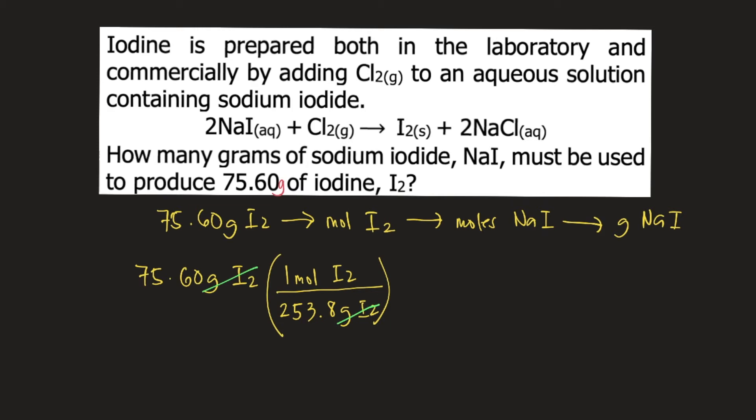Next is to convert moles of I2 to moles of NaI. So in order to do that, you look at the balanced equation. The balanced equation says that for every 1 mole of I2, you need 2 moles of NaI. So you put that into the equation.